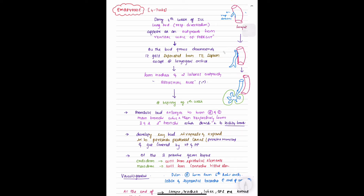At the beginning of the fifth week, the bronchial buds enlarge to form right and left main bronchi, which then respectively form secondary and tertiary bronchi. The developing lung bud invaginates and expands into the pericardioperitoneal canal, which is the primitive pleural cavity, and gets covered by the visceral pleura and parietal pleura.